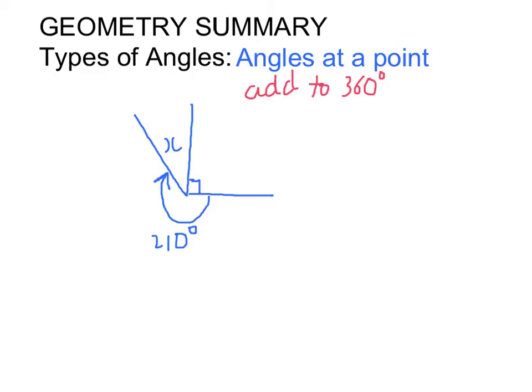Angles at a point add up to 360. In this case, it's 90 plus 210, which equals 300, and x must equal 60.